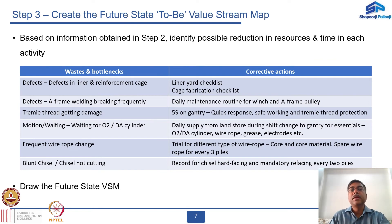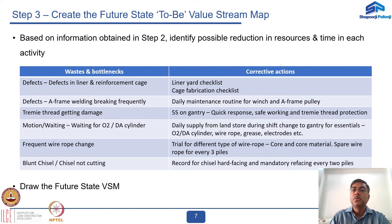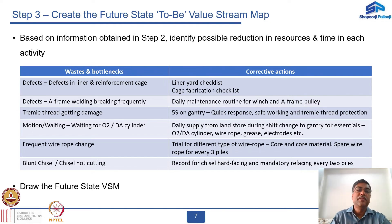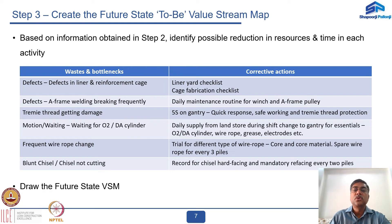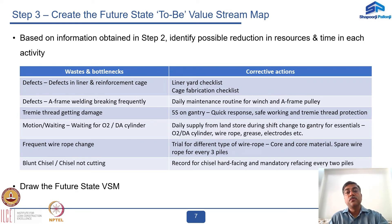Step three is to create the future state to-be value stream map. Based on the information obtained in step two, identify possible reductions in resources and time in each activity. Identify the various wastes and bottlenecks and the possible corrective actions to mitigate those issues. Based on this information, draw a future state value stream map — what you can achieve by taking care of all these problems.